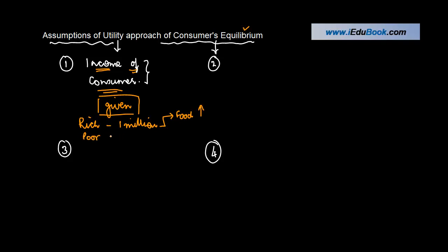Whereas for the poor guy who's there, even a hundred thousand will be too good a money, and therefore the amount he'll be spending on food will obviously be much lesser than what this guy might be spending.